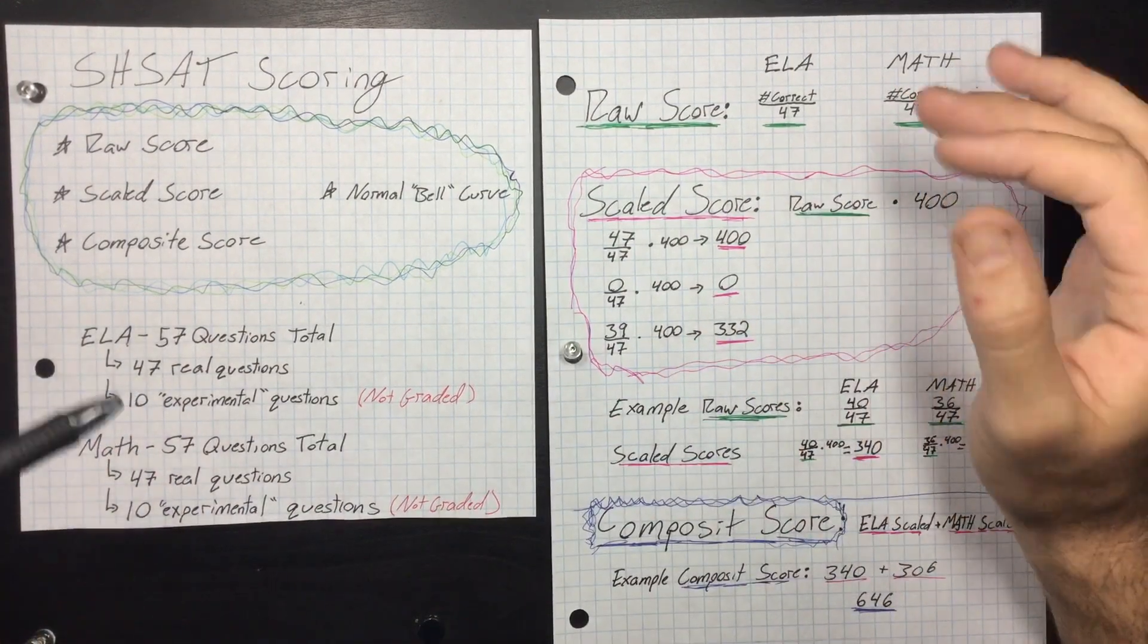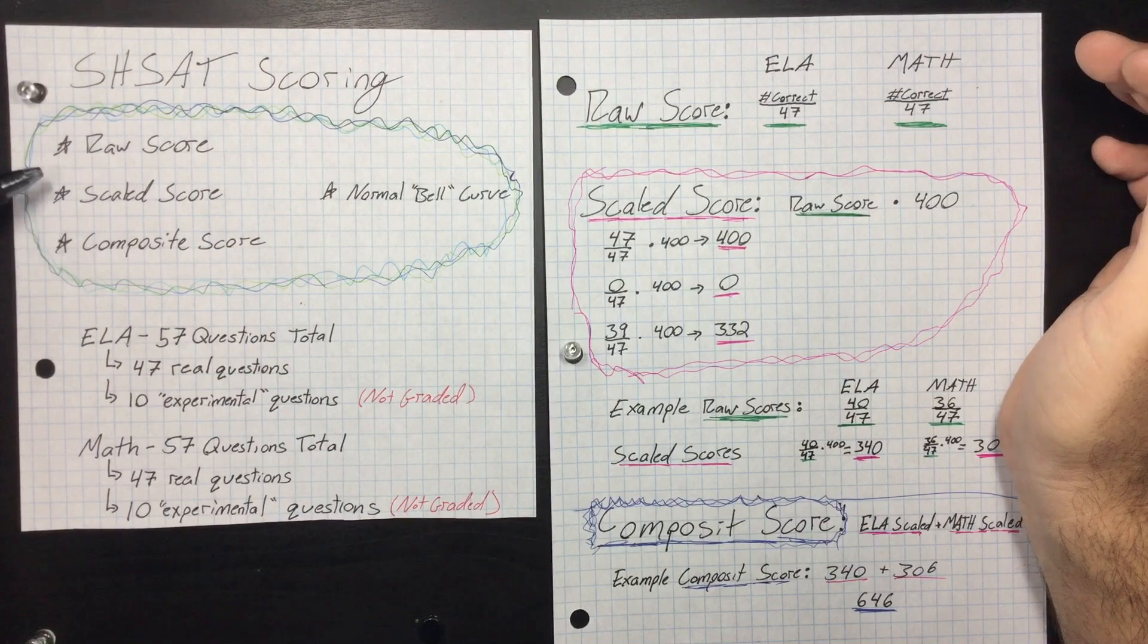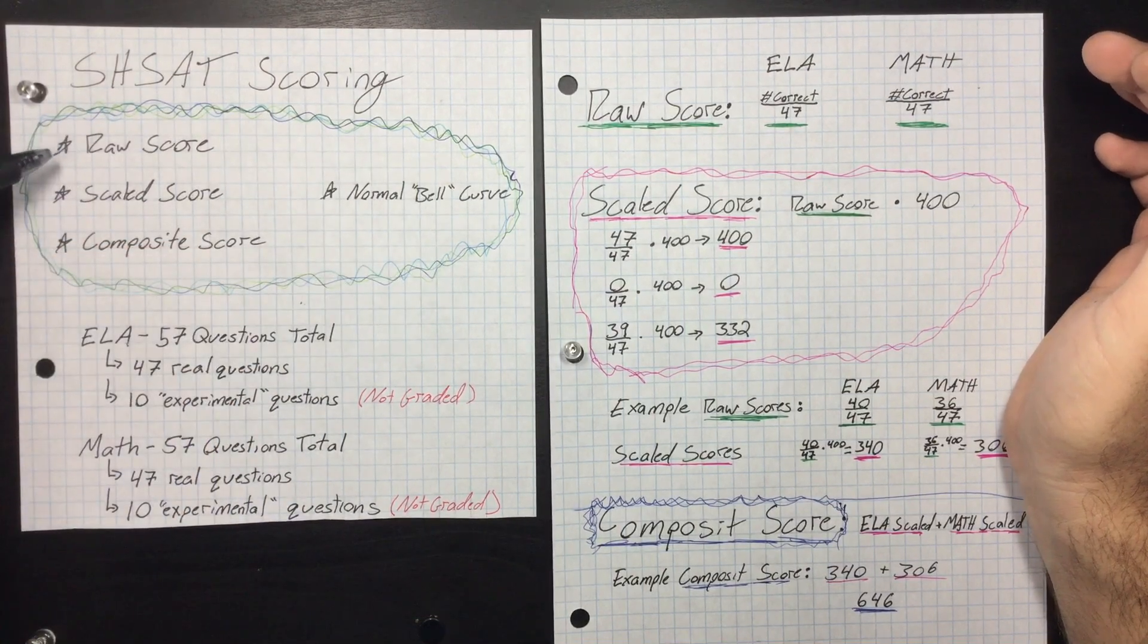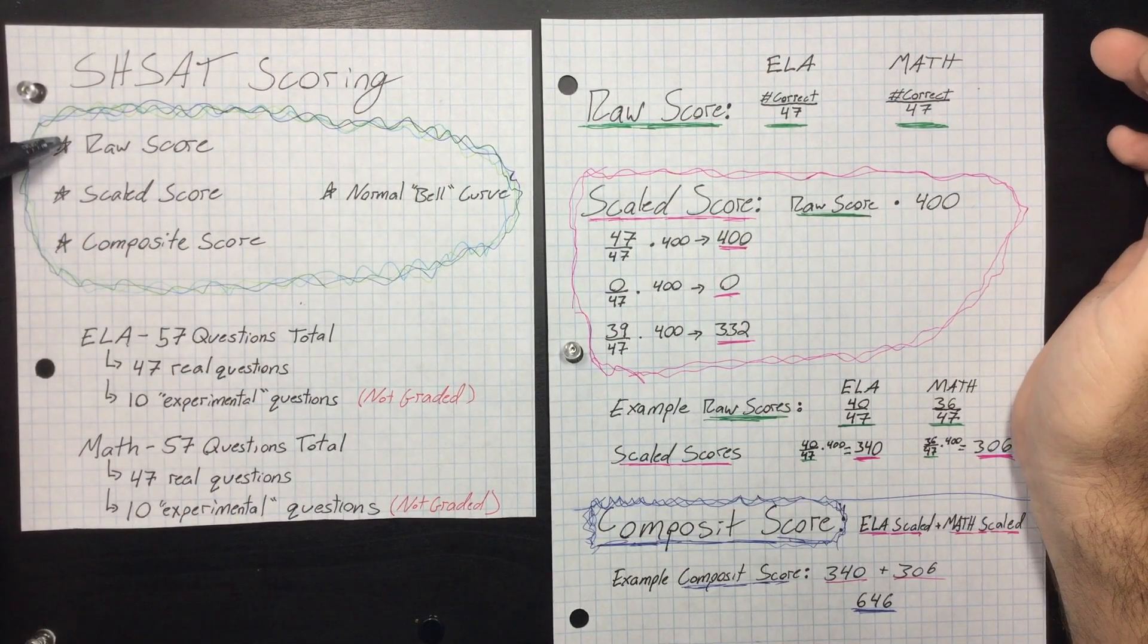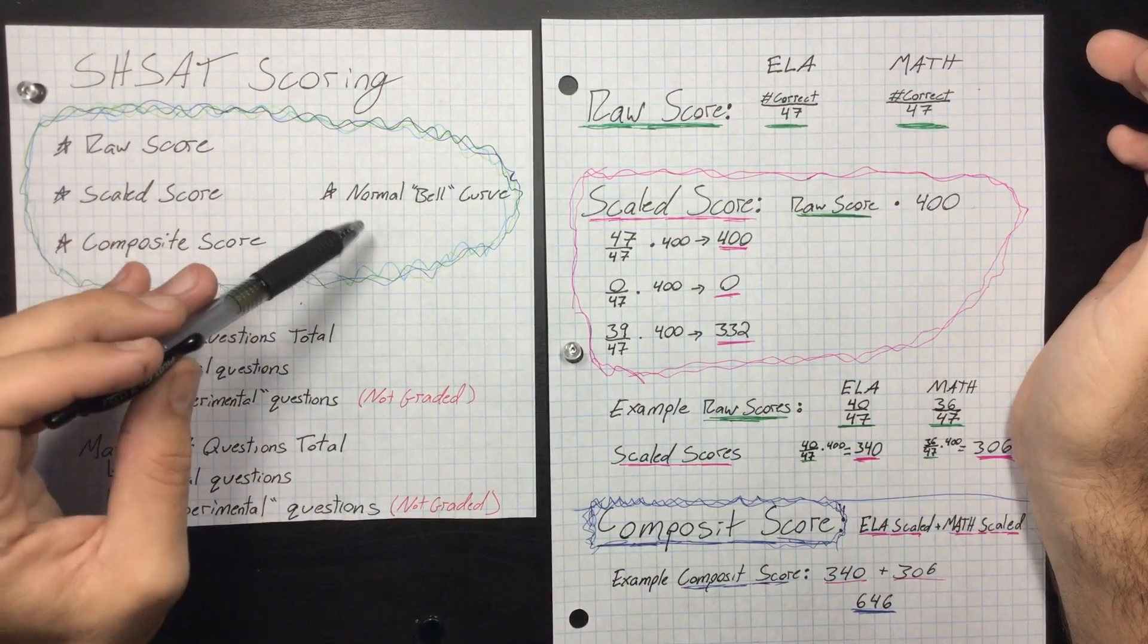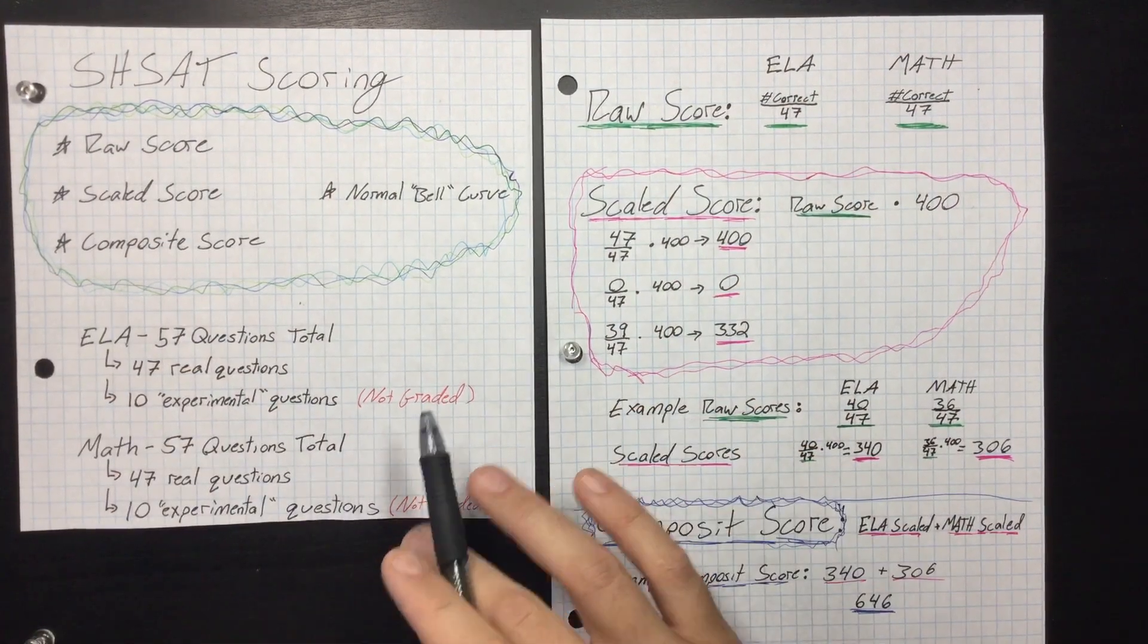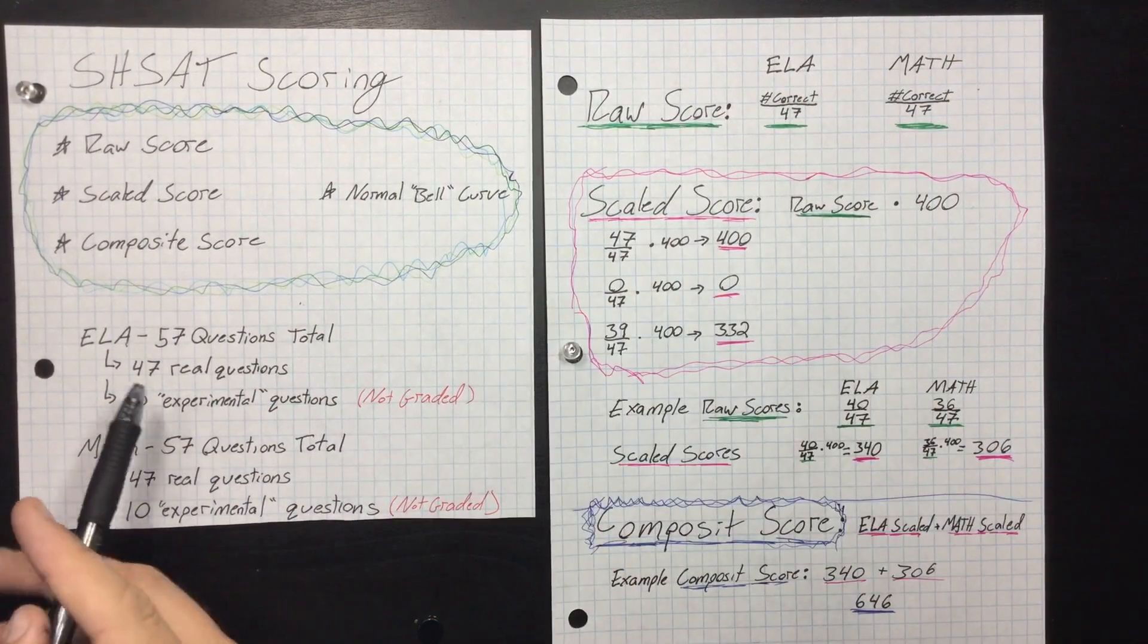But the easy way to understand the SHSAT and the quick way to think about it - first, here are some terms you're going to have to be aware of: the raw score, scaled score, composite score, and just a normal bell curve. And we'll talk about why a bell curve is important in the complex explanation of the SHSAT score.